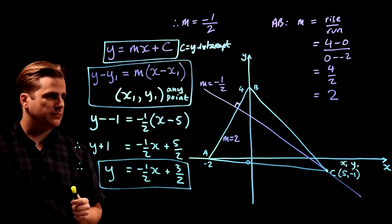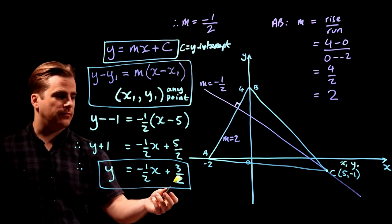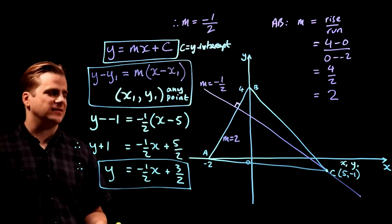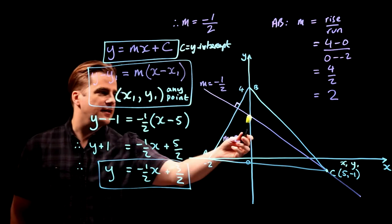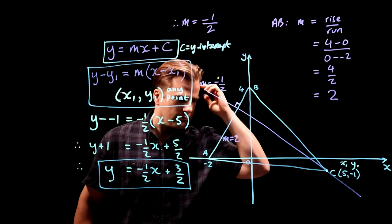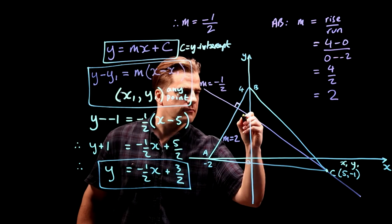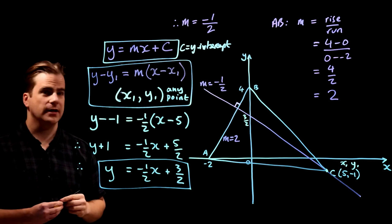And we've left it in the form y equals mx plus c. So by answering the question, we've actually found out, well not by chance, just by answering the question, we've found out that the y-intercept there is 3 over 2 of our line.